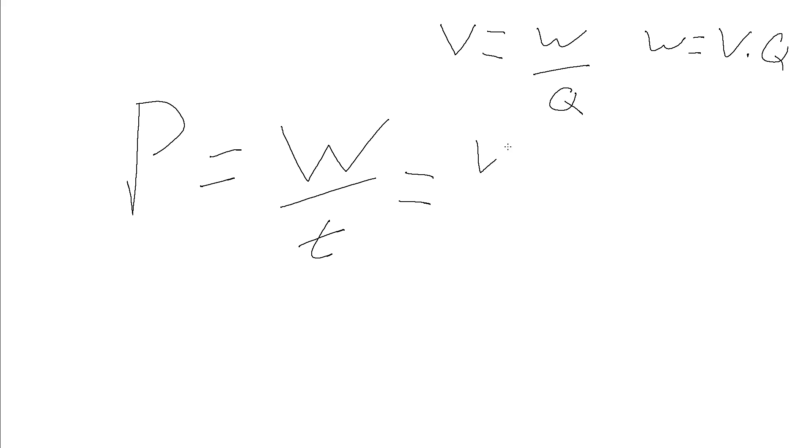So power is voltage times charge. So that's this work done divided by a time. Now the more prudent amongst you, the more eagle-eyed amongst you, will notice that Q over T is equal to I. And so we can rearrange this as VI.